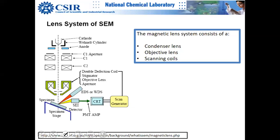The lens system includes an aperture, condenser one, and condenser two.